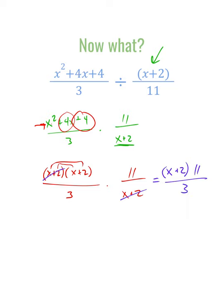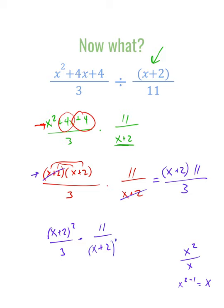Because there were two x plus 2s, I could also write it as x plus 2 squared over 3 times 11 over x plus 2. Keep in mind: if we had x squared over x, that's x to the 2 minus 1, or just x. Same thing here — when we have a squared term over a single exponent, we can simplify out one of the x plus 2s but not both. It didn't matter which one I simplified out, but there's still one x plus 2 left in the numerator.